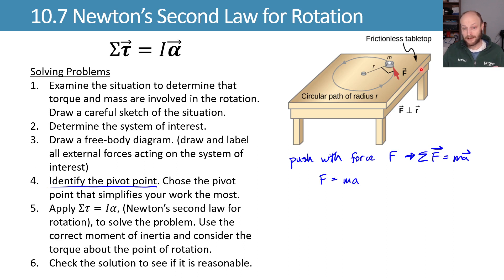Knowing that that acceleration is equal to R alpha for the tangential component, we can substitute that in and say my force is equal to mass times R alpha, which lets us then multiply by another R, say RF is equal to MR squared alpha.